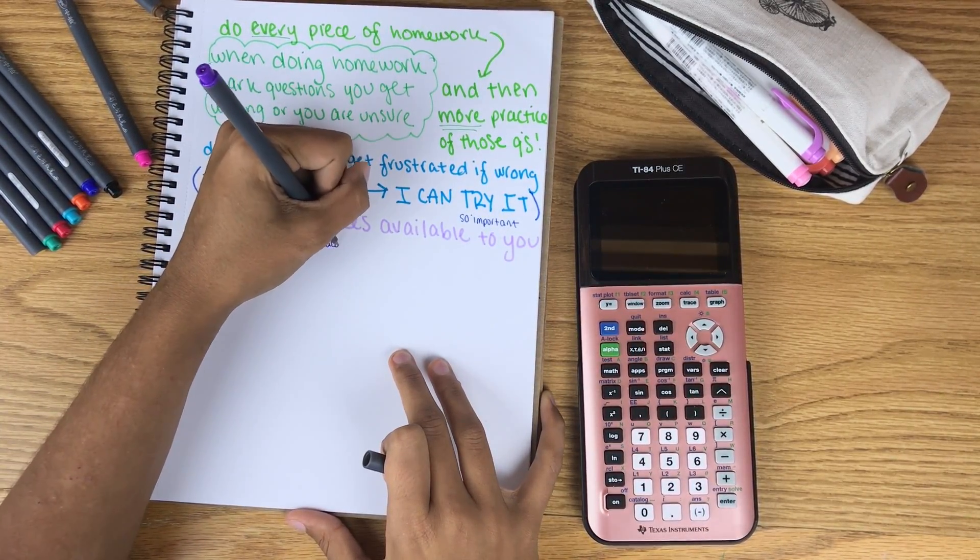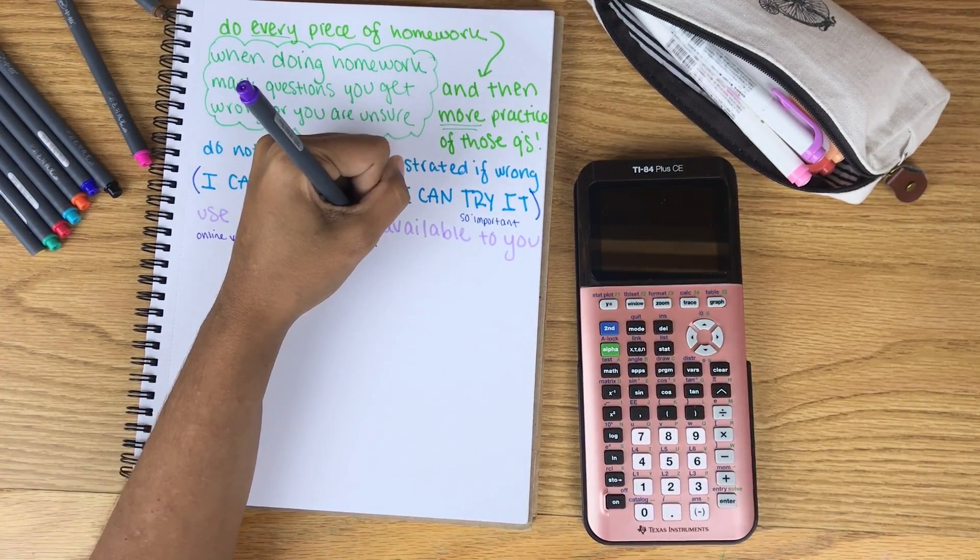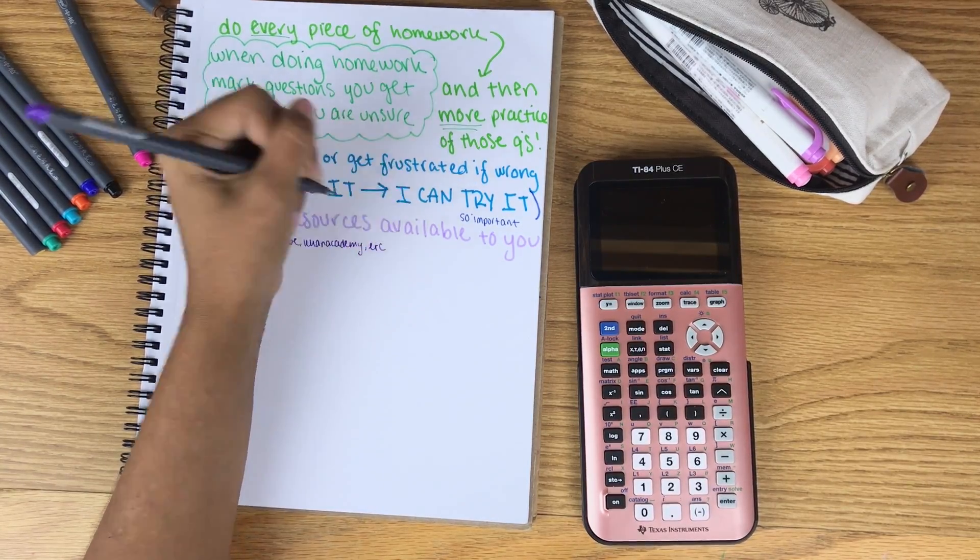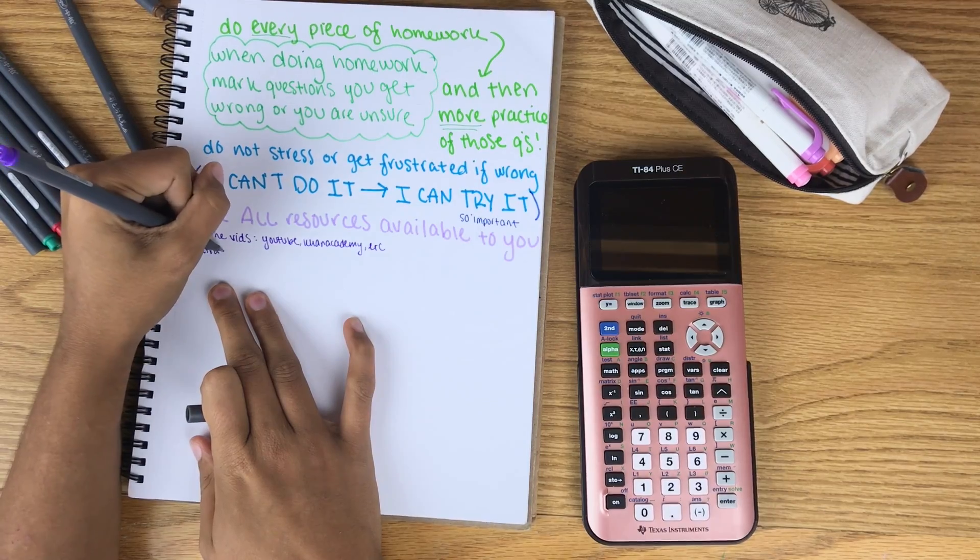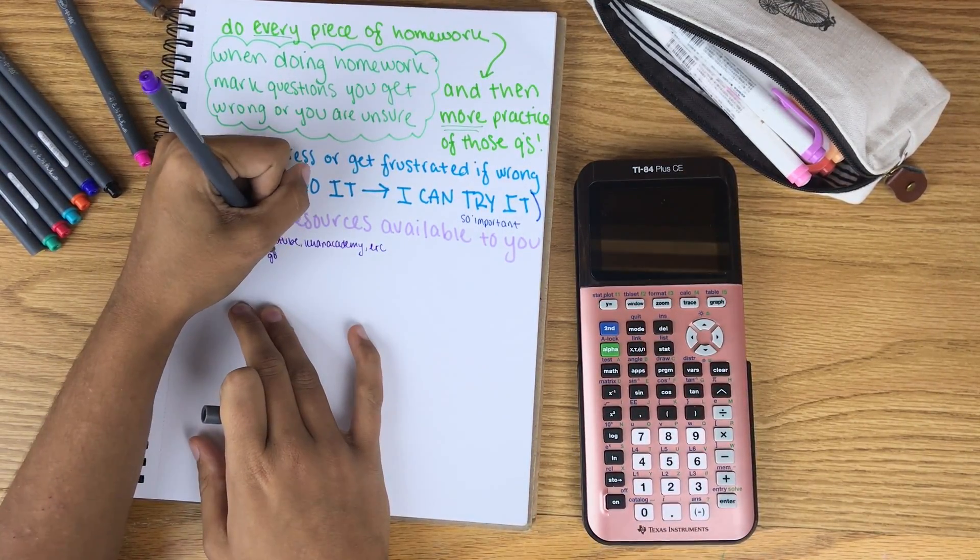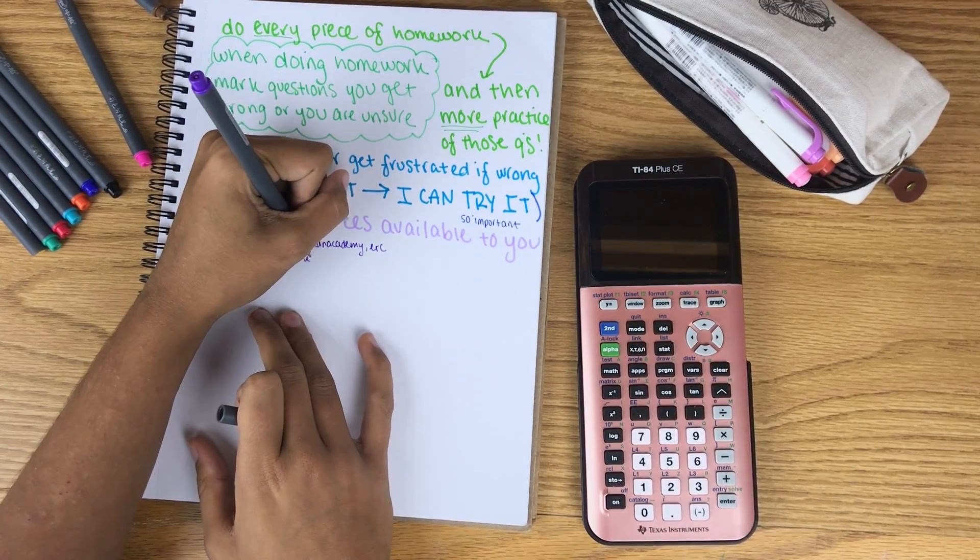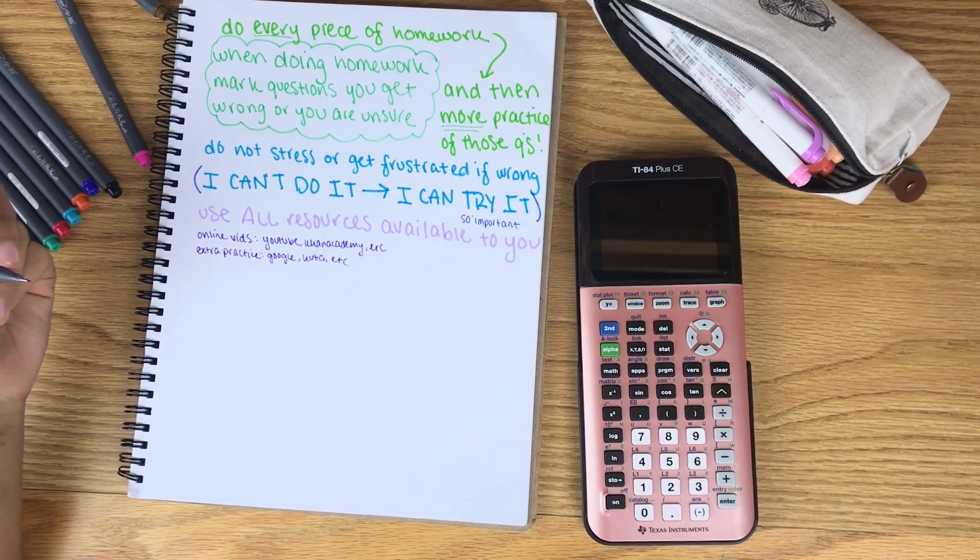For extra practice I usually use KUTA for extra worksheets. I use my textbook, I use my workbooks, they're AP prep books if you are in high school still. You can also just google the topic and do like worksheet extra practice, you will absolutely find stuff, I promise.